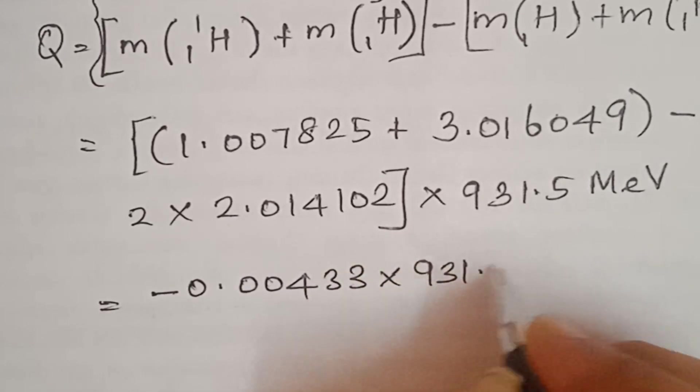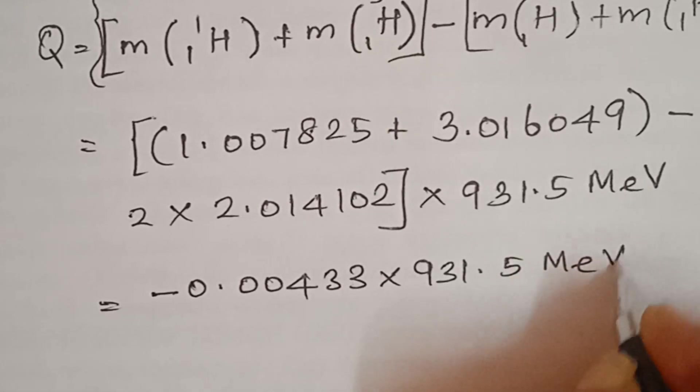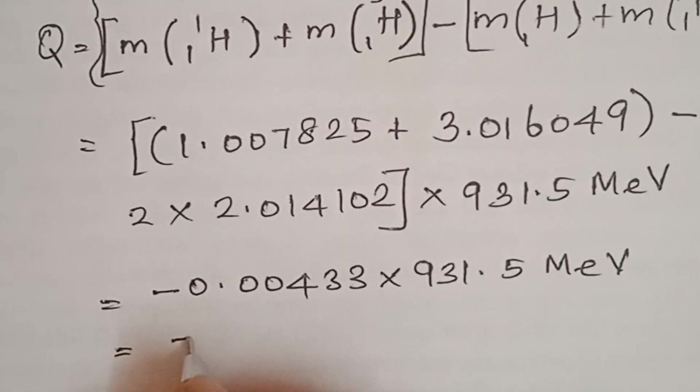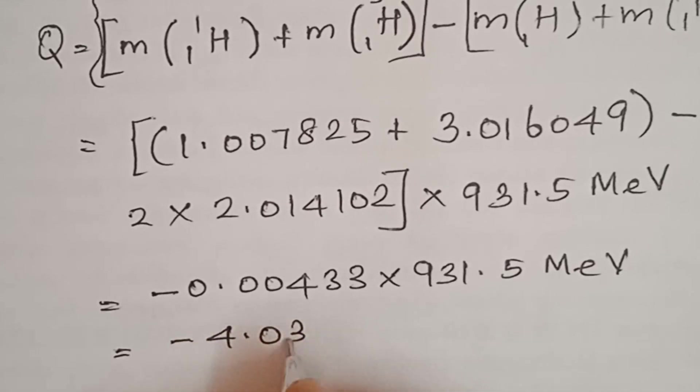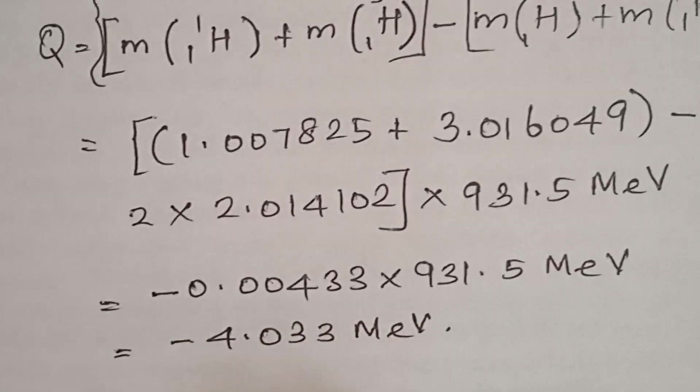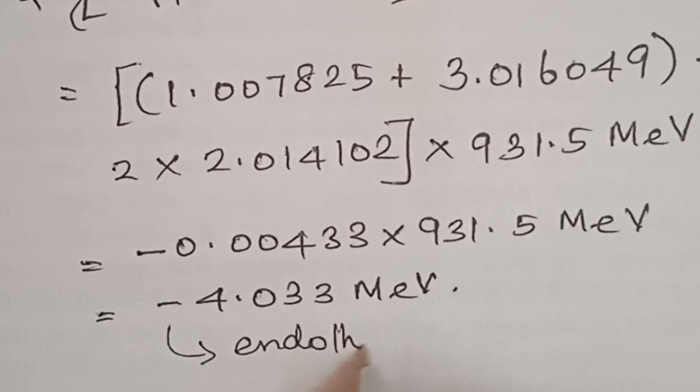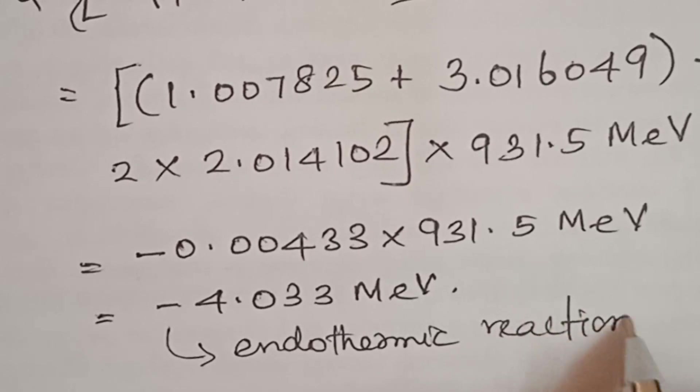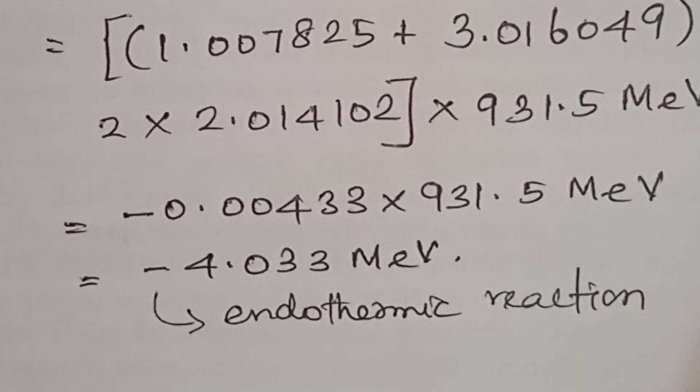This equals minus 0.00433 into 931.5 million electron volts, which gives minus 4.03 million electron volts. This negative sign means the reaction is endothermic. Q is negative, so it's endothermic.